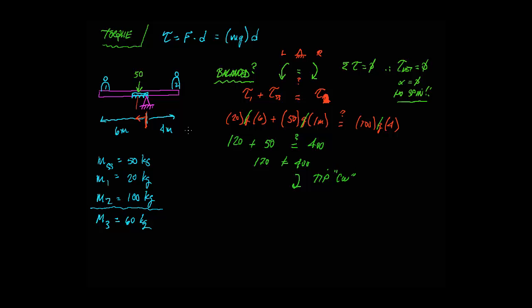So how do we deal with that? Well, we can real quickly put a third person. We'd have to put them on this side. And to find out where they would go, what we would do is say 60 acting at some distance we don't know, plus the others. The 20 times 6 plus the 50 times 1 equals the 100 times 4. And we end up solving for x. That becomes 400 minus 170, that's 230 divided by 60. 3.8 meters from the end.